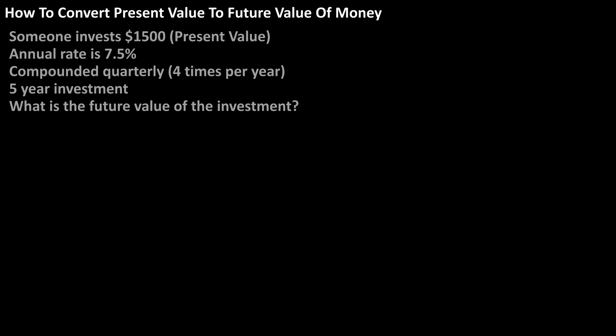If we're given that the present value of an investment is $1,500, the annual rate is 7.5%, it's compounded quarterly — so four times per year — and it is a five-year investment, what is the future value of the investment?